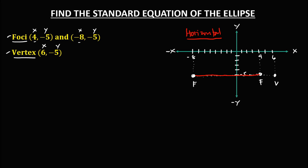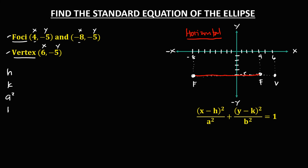The formula for the horizontal ellipse is x squared over a squared plus y squared over b squared equals 1. To write the standard equation, we first need to find the values of h, k, a squared, and b squared.